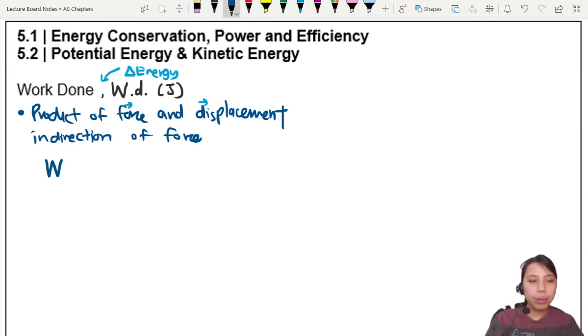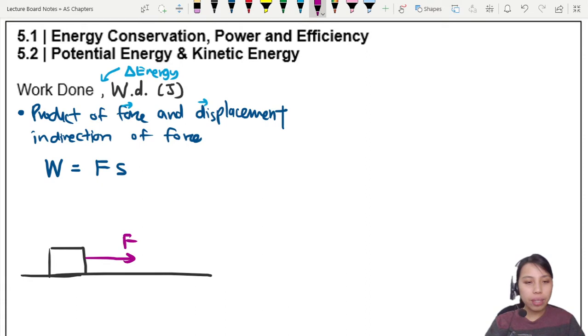So the definition you want to write here is that work done is the product of force and displacement - but not just any force, any displacement. Remember force is a vector. Displacement is also a vector. So direction matters. So force times displacement in the direction of the force. So we'll have W equals to F times S. So let's say I have a box right here on a surface that's smooth. And I use a force to pull this box in a certain direction. So this force, the purple color one, is doing work on the box.